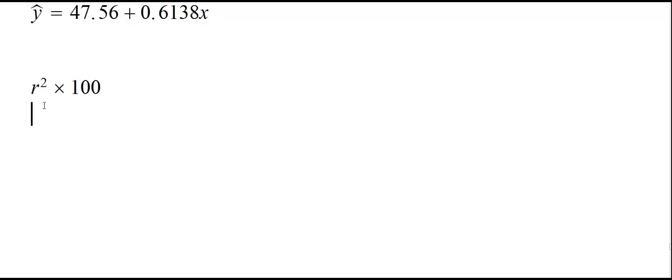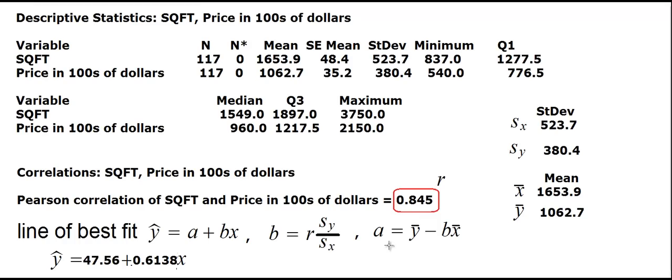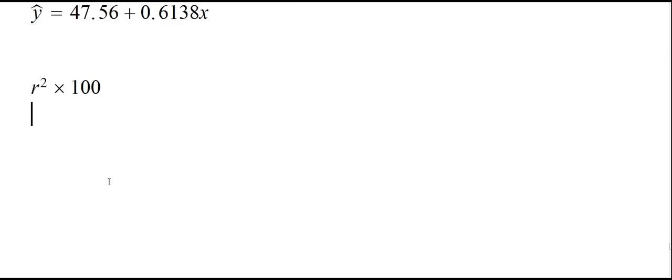The correlation coefficient helps us understand the proportion or percentage of variation in the y values, which will be the selling price of the house in this case, as explained by this line of best fit. Here what we have, we can compute it by r² × 100. If you recall the summary statistics, the value of r was 0.845. So take 0.845, square it, and multiply it by 100 because right now we only have a proportion. What it tells us is that about 71% of the variation of the values in the selling price is explained by this line of best fit.